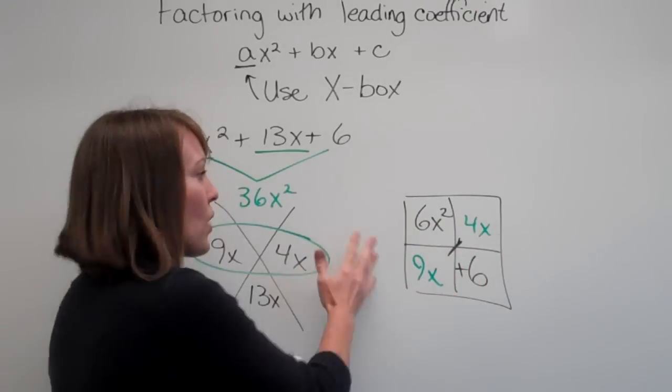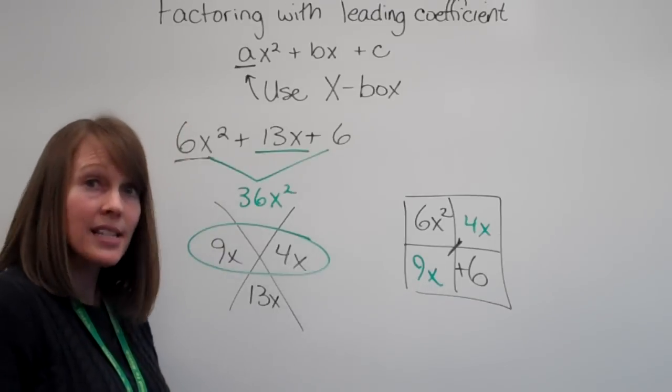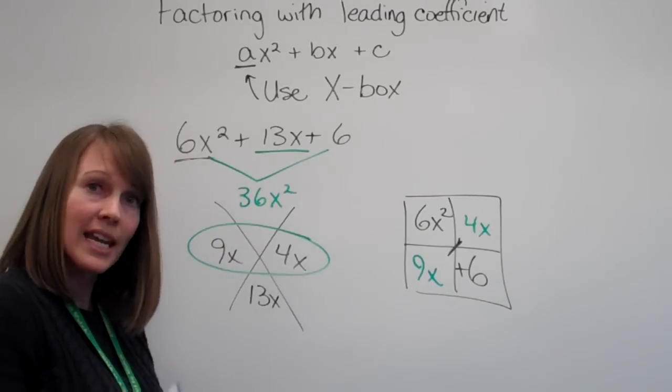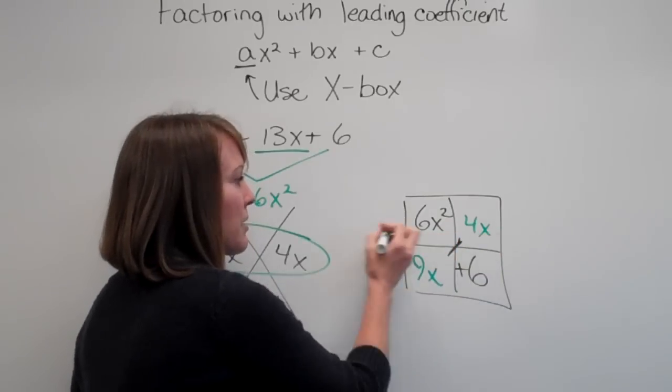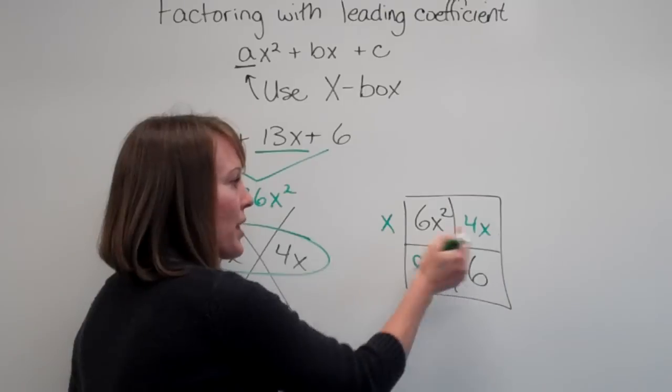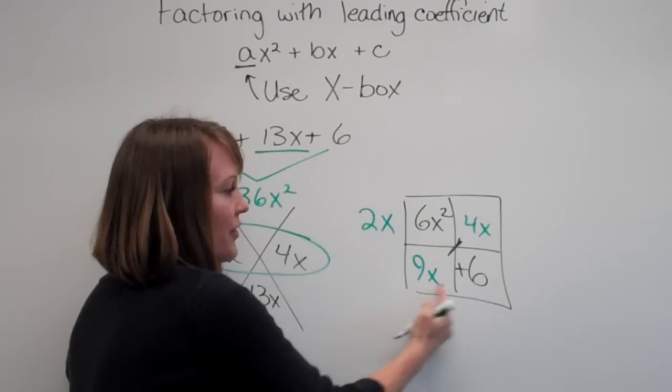Now remember, we're trying to find what did we multiply together to get this. And so now we're going to do the greatest common factor of each row and each column. So check out the first row. They both can be divided by an x and they both have a 2 in common.